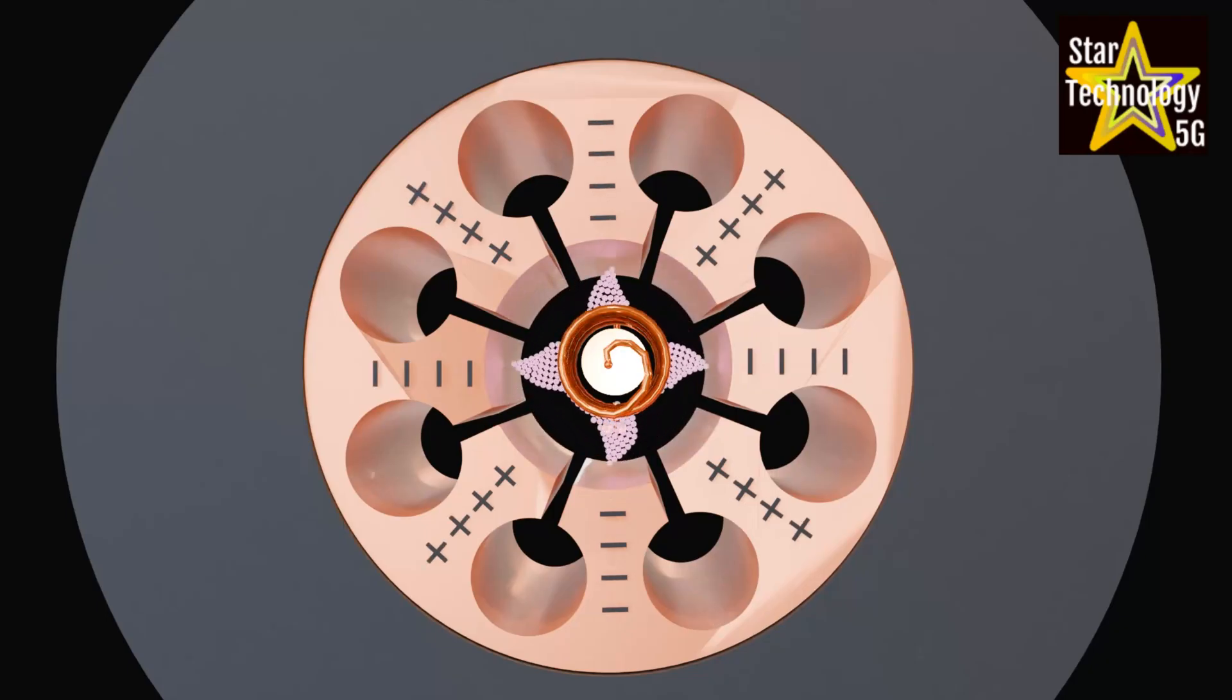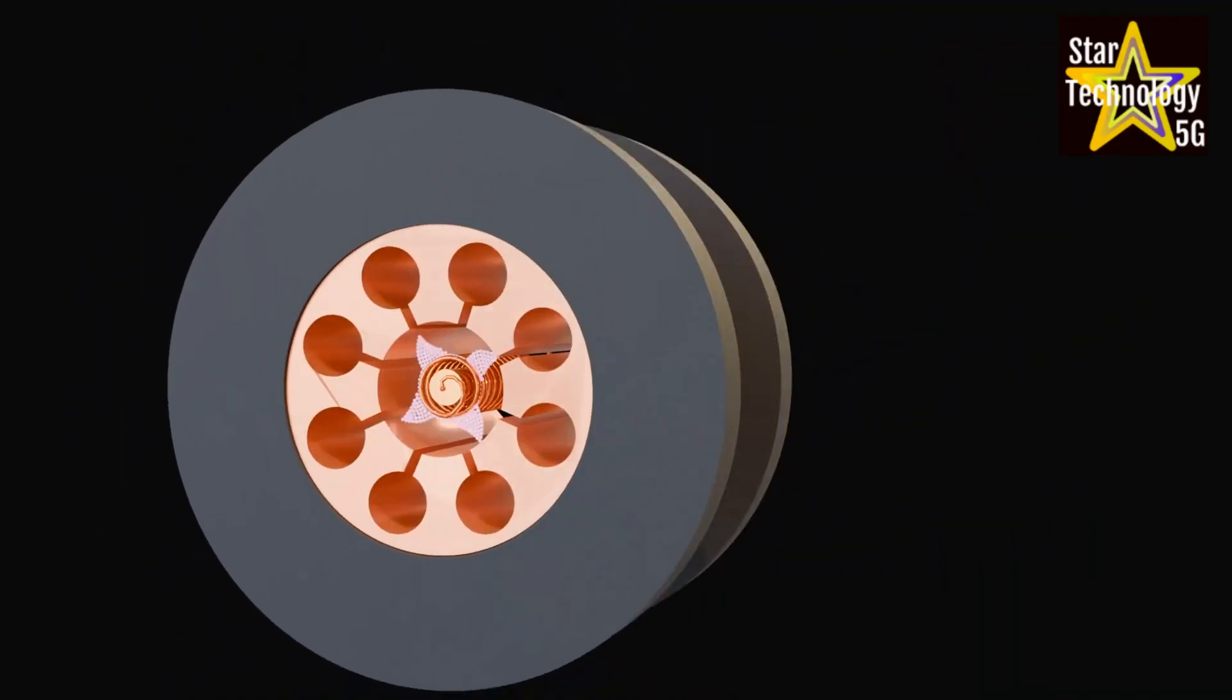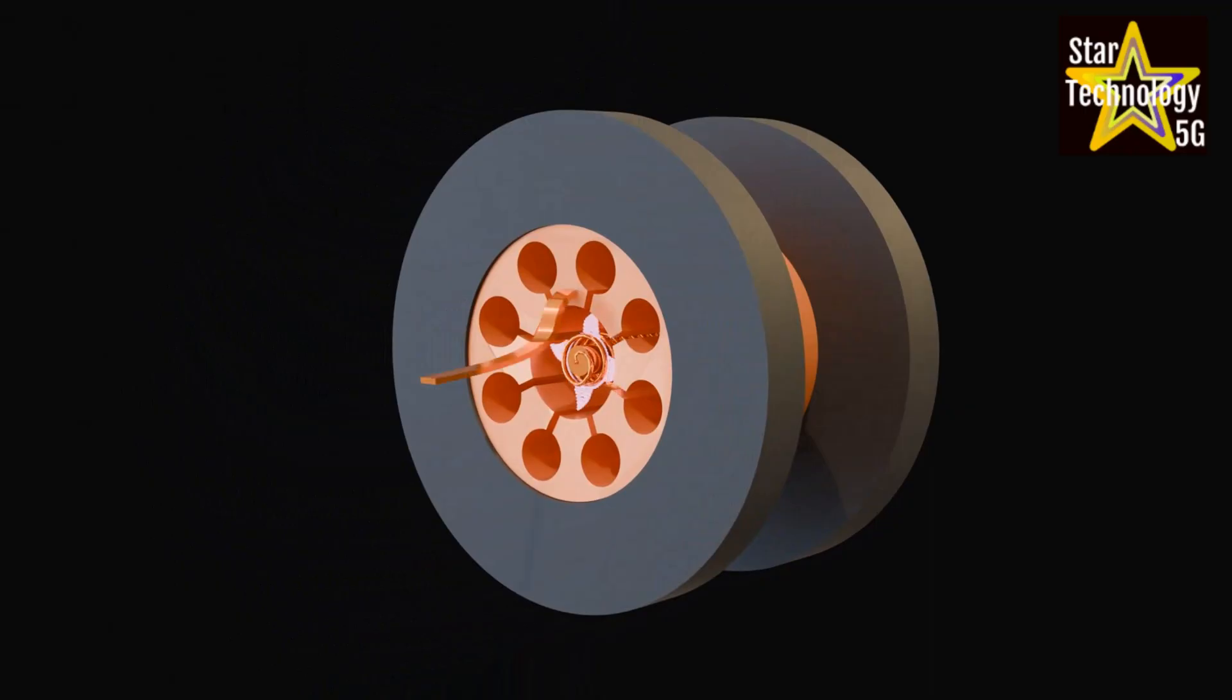The operation frequency depends on the sizes of the cavities and the interaction space between anode and cathode. The multi-gap RF cavities and permanent magnets produce a high microwave. The result is a well-focused electron beam in a relatively light package.